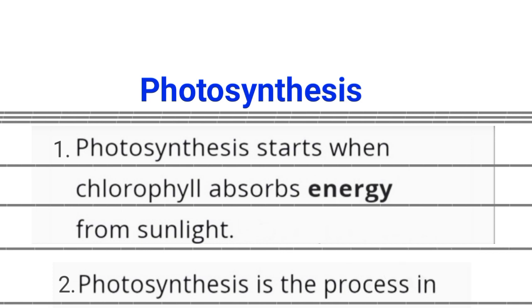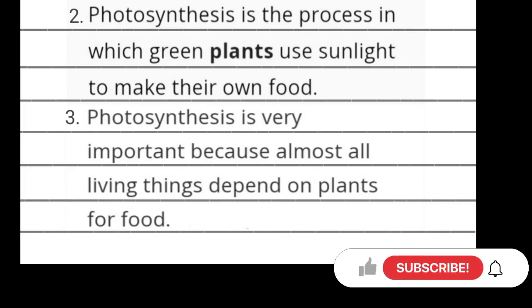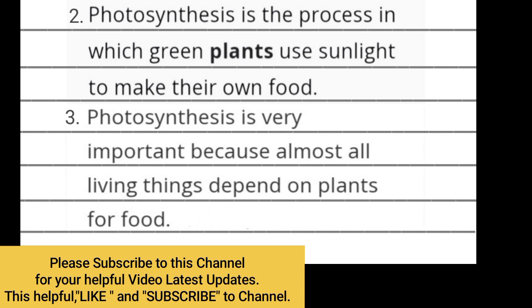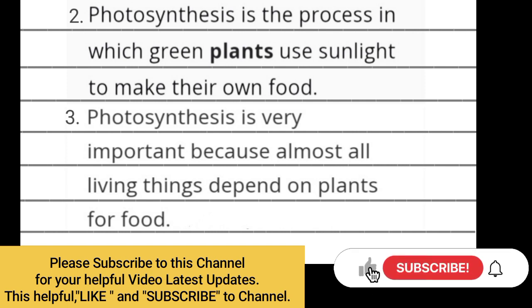Number one: Photosynthesis starts when chlorophyll absorbs energy from sunlight. Number two: Photosynthesis is the process in which green plants use sunlight to make their own food. Number three: Photosynthesis is very important because almost all living things depend on plants for food.